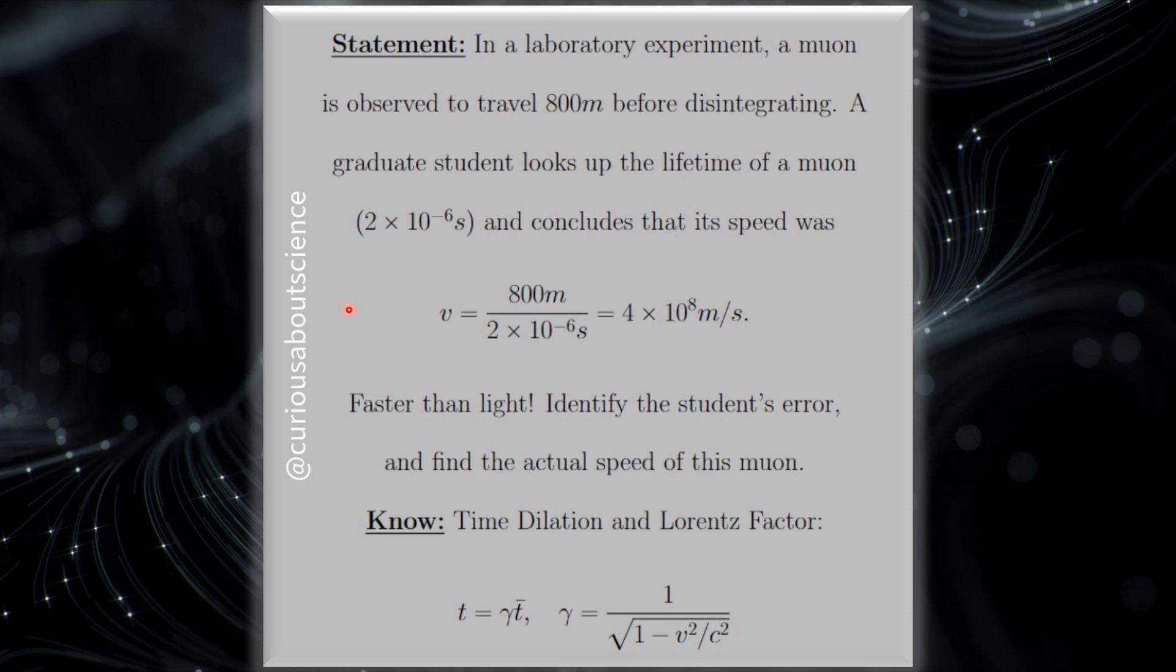However, this is faster than the speed of light. Identify the student's error and find the actual speed of the muon. Okay, so what we know is that time dilation is a consequence of the geometry, and what this tells us is that running clocks move slow. We saw that with the time interval question earlier, now we see it again.